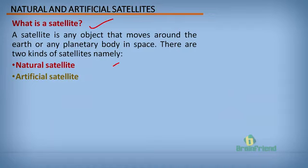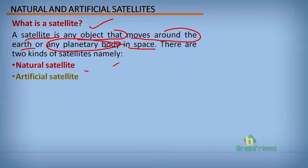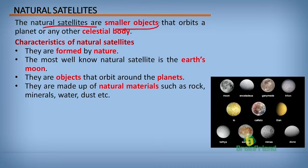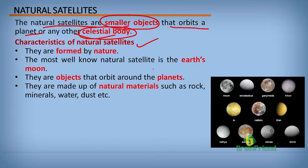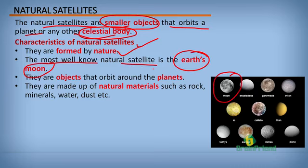What is a satellite? A satellite is any object that moves around the Earth or any planetary body in space. There are two kinds of satellites: the natural satellite and the artificial satellite. Natural satellites are smaller objects that orbit a planet or any celestial body — that is, heavenly bodies in space. Natural satellites are formed by nature; the most well-known natural satellite is the Earth's Moon.